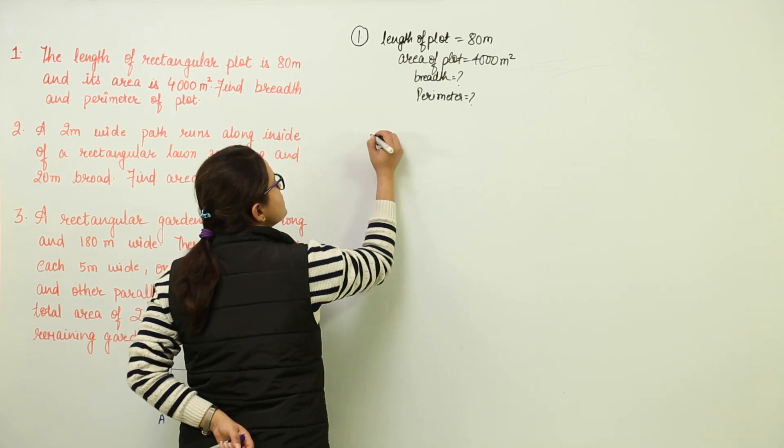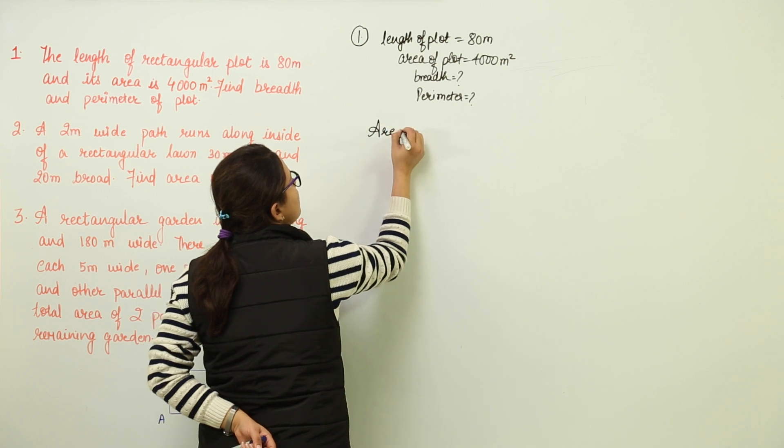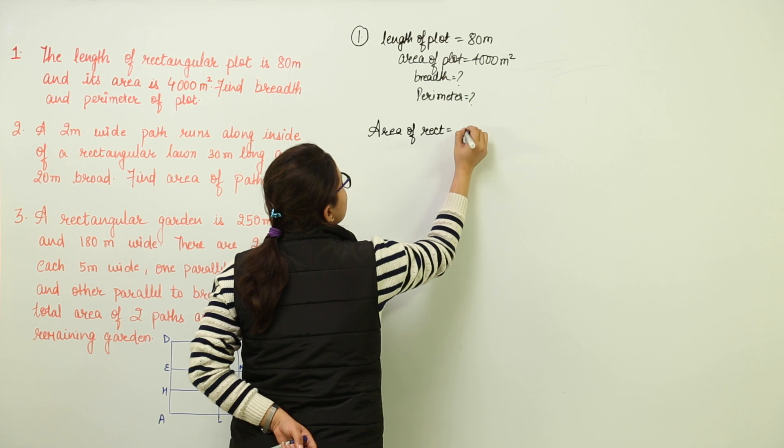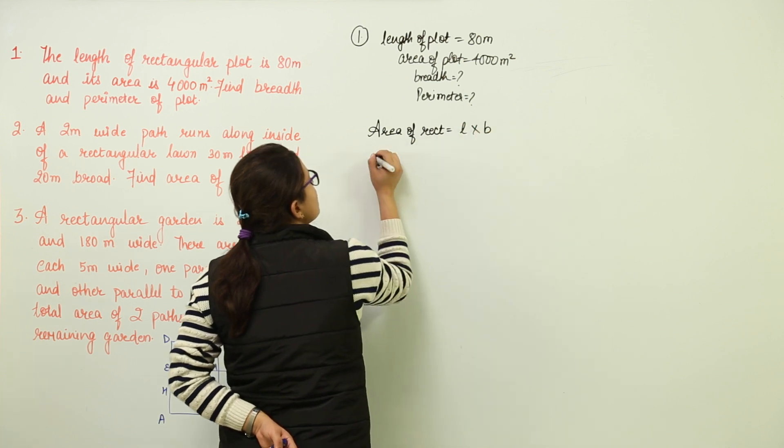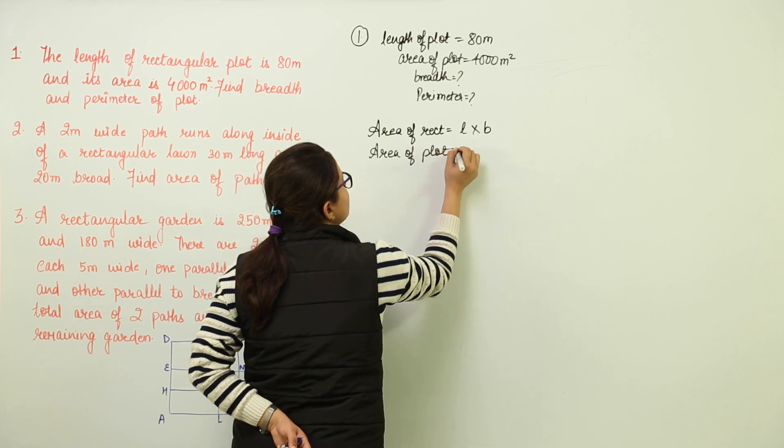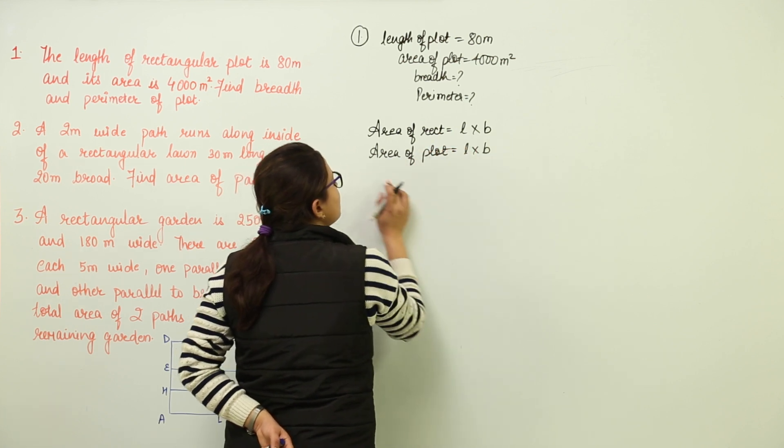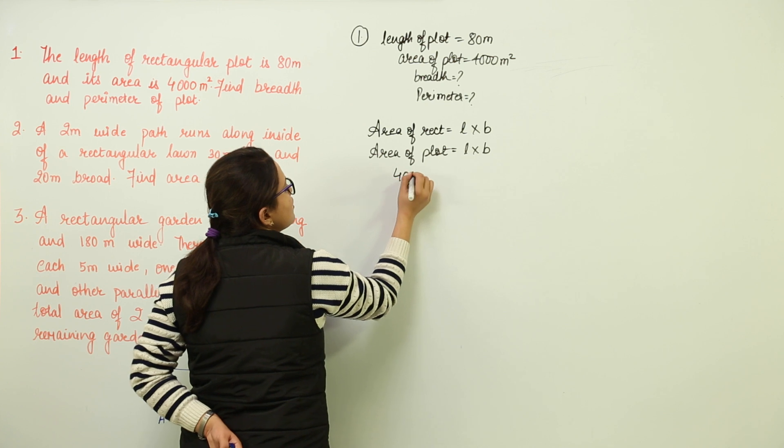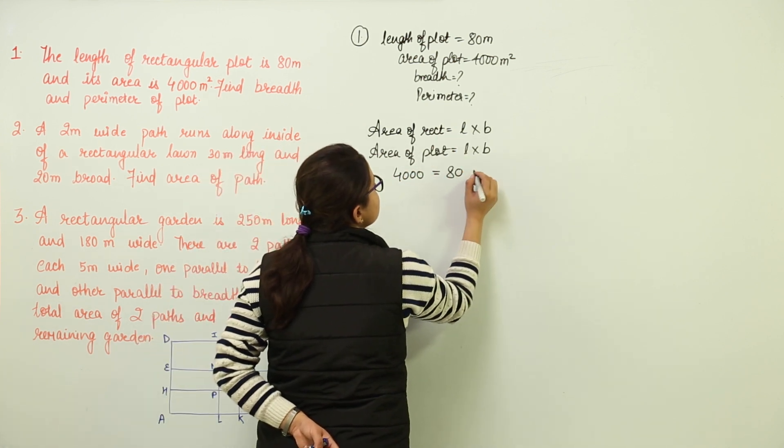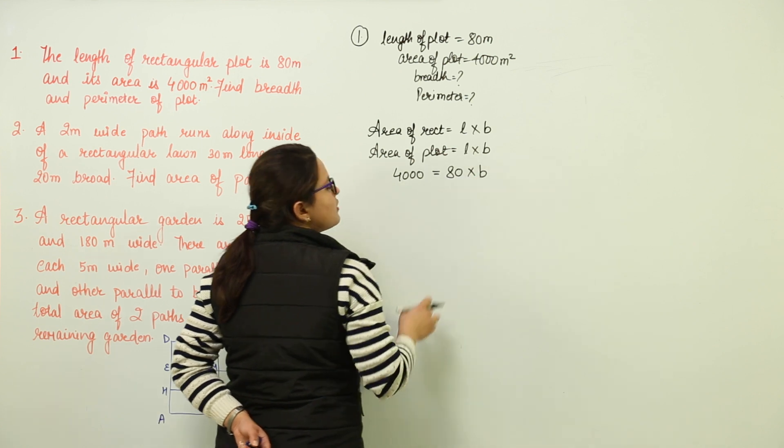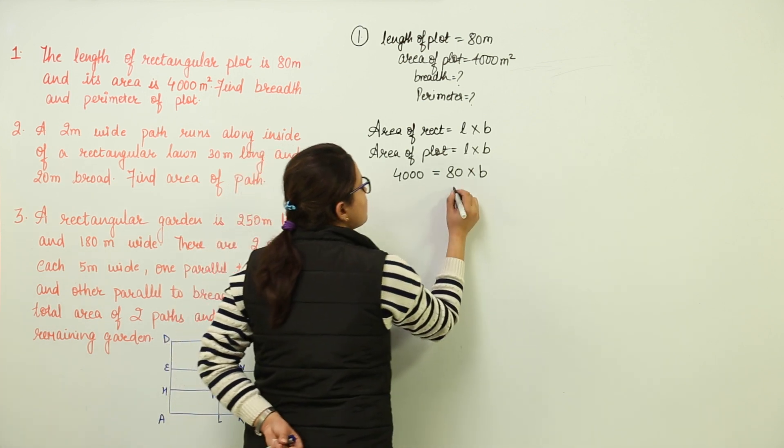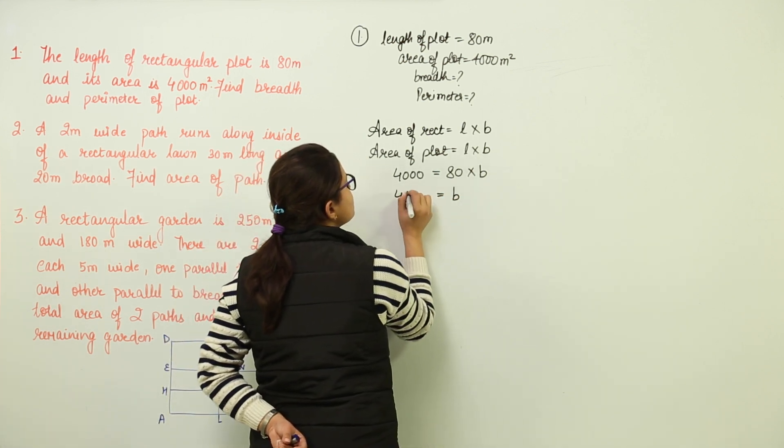Yes we do have and which is equal to the formula of area of rectangle that was length into breadth. Because here we have the plot, so we will write area of plot equal to length into breadth. Now you can see you have been given the area that is 4000, the length has been given to us as 80 and breadth is to be found. So we have automatically generated a formula for the breadth.